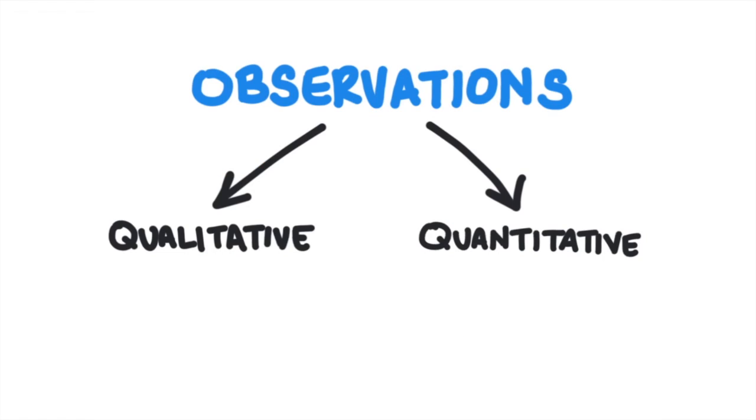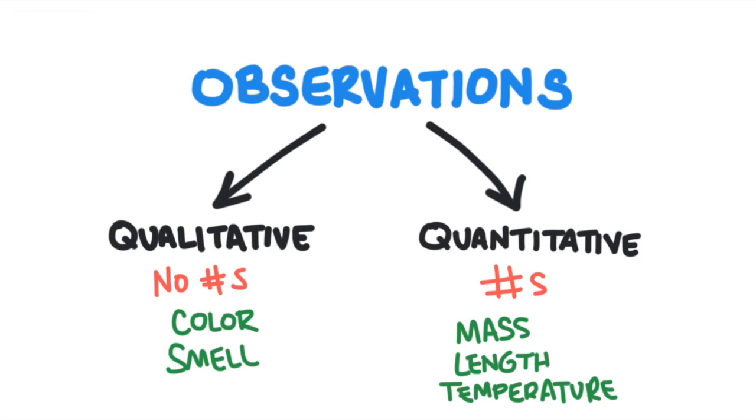There are two types of observations: qualitative observations and quantitative observations. Qualitative observations are observations that do not involve numbers, like observing the color of a leaf or the smell of a banana. Quantitative observations are observations that do involve numbers, like measuring mass, length, or temperature.